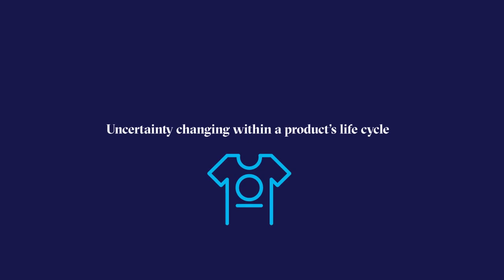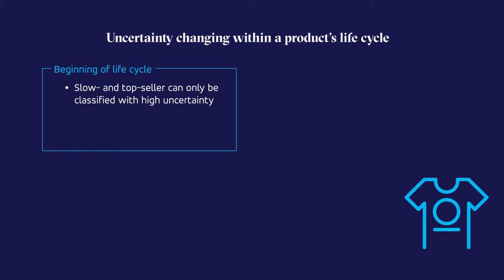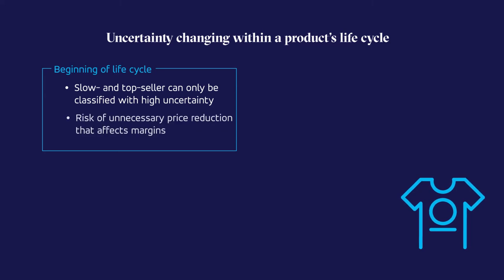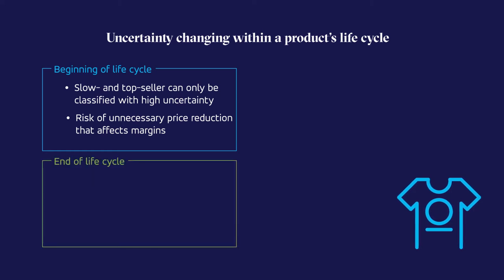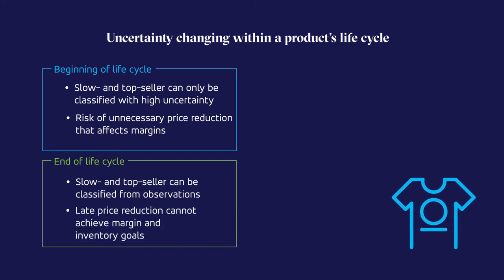Now let us understand how machine learning helps retail businesses in decision making. Let's pick the clearance problem. Looking at the product life cycle, we observe that at the beginning, forecasting the rate of sales is quite uncertain. As we have little product history, we cannot classify it as a slow or average seller accurately. Making such a decision early on entails a high risk of applying unnecessary markdowns and losing margins. On the other hand, towards the end of the life cycle, the product forecast is quite accurate. However, waiting for such a long period to make the first pricing decision is unprofitable, especially when calculated markdowns are necessary to achieve inventory goals.